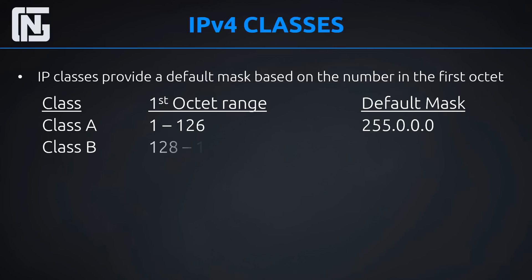Let's look at Class B. Class B is 128 to 191 in the first octet, and that gives a default mask of 255.255.0.0. So if we had an IP address that started with 129, like 129.0.5.10, we know by default that's Class B, and it's going to have at least this mask before subnetting: 255.255.0.0.